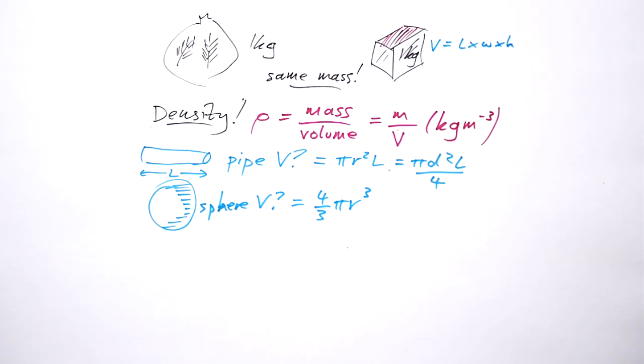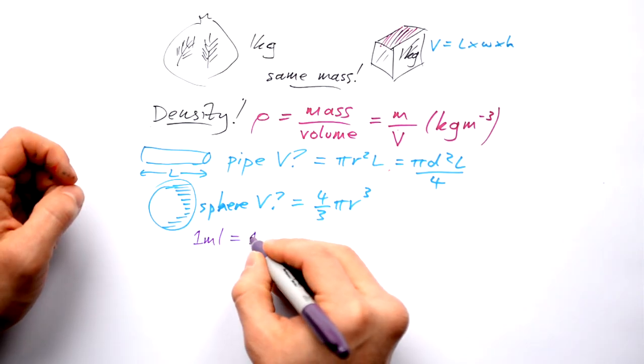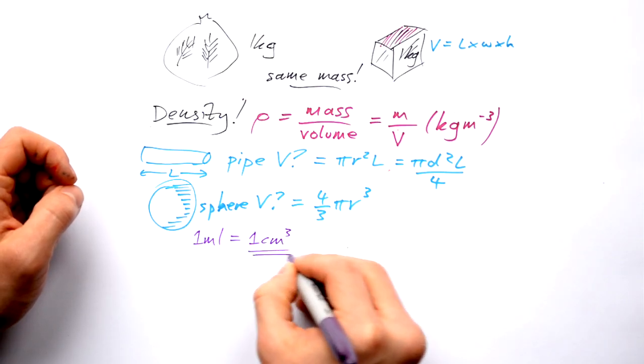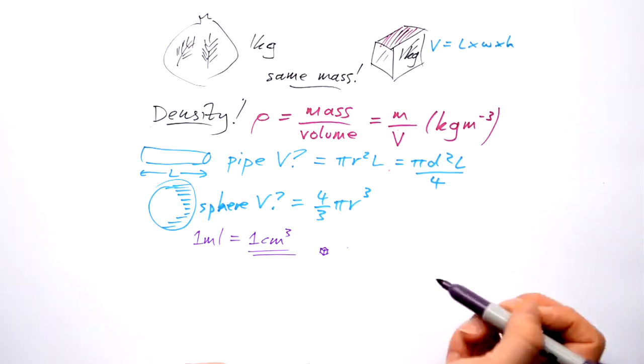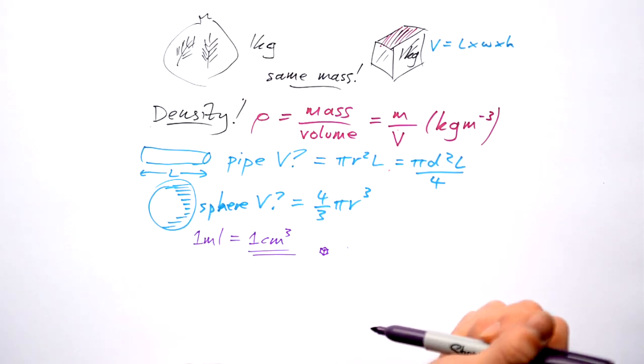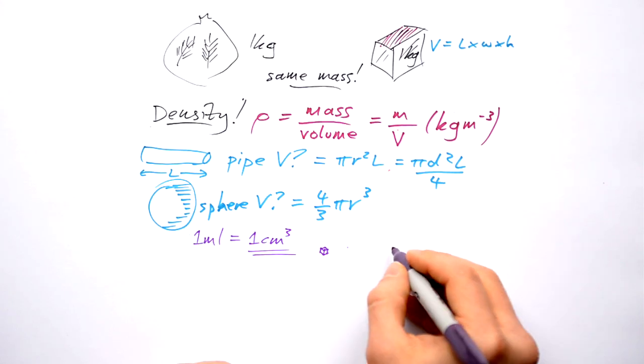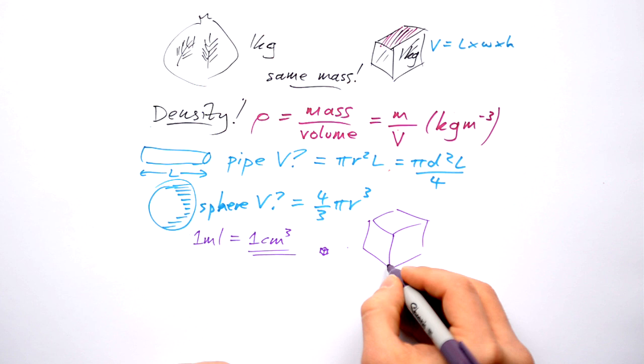The difficulty comes though when people have to deal with milliliters. Now one milliliter is one centimeter cubed. That's very small. But we don't use centimeters cubed for volume. We use meters cubed. So we need some way of figuring out how many meters cubed that is.